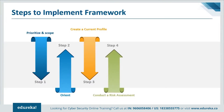Step four is to conduct a risk assessment. This assessment could be guided by the organization's overall risk management process or previous risk assessment activities. The organization analyzes the operational environment to discern the likelihood of a cybersecurity event and its potential impact. It is important that the organization identify emerging risks and use cyber threat information from internal and external sources to gain a better understanding of the likelihood and impact of cybersecurity events.